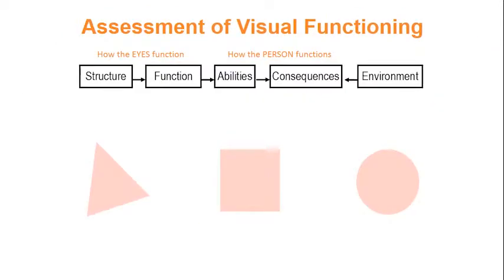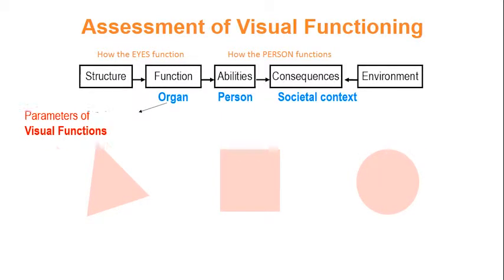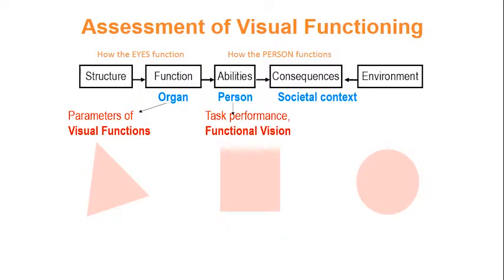To summarize what this means for our assessment in vision rehabilitation, we can assess three main aspects: the organ, the person, and the societal context. Under organ function, we must deal with the parameters of visual functions. For the person, we must consider task performance and functional vision. In a societal context, we must consider vision-related quality of life.